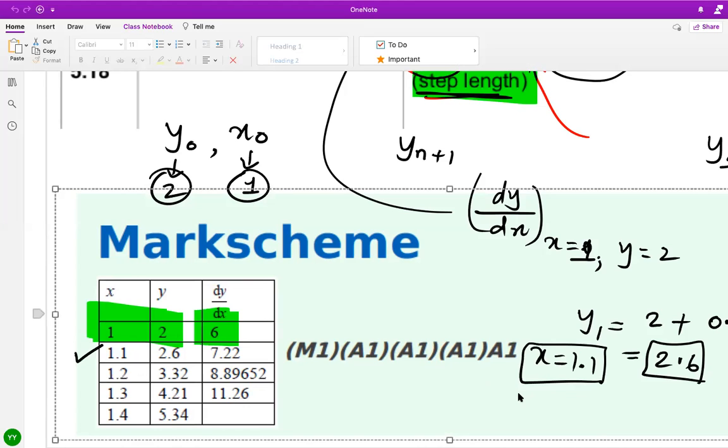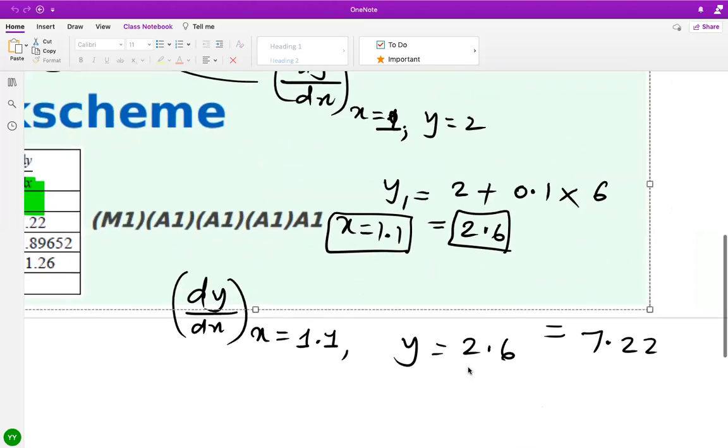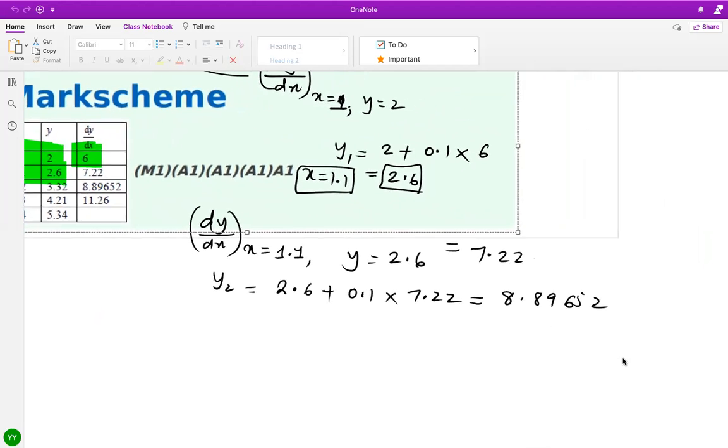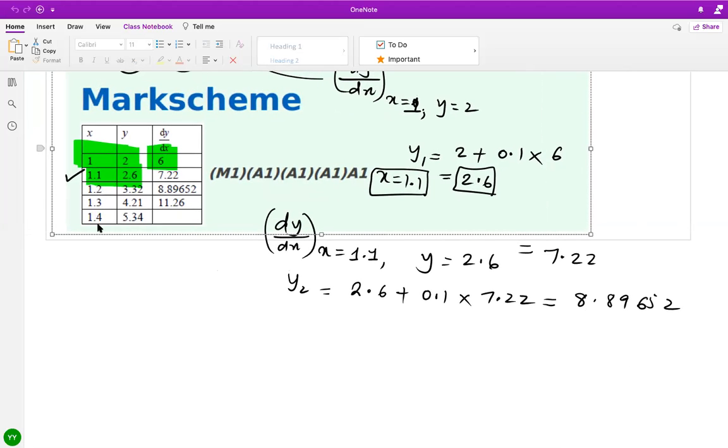Now I'm going to use these as the next set of x and y values to get the expression. I'll find dy/dx at x equals 1.1 and y equals 2.6. The derivative at that point is 7.22. To get y₂, you put 2.6 plus 0.1 times 7.22, which gives 3.32 or 8.89652. You continue until you reach 1.4, because that's your final objective.